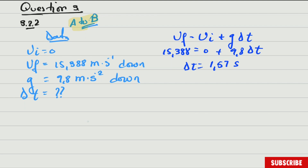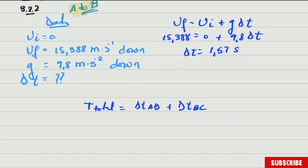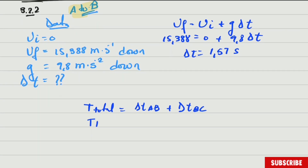Then the total time equals time AB plus time BC. We do have both of those times, so the total time equals 1.57 plus 0.125, which gives a total time of approximately 1.7 seconds. That is the answer for this question.